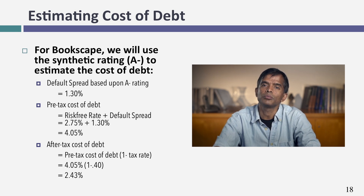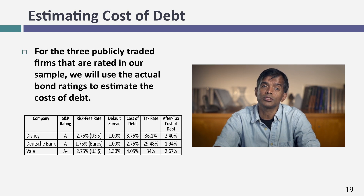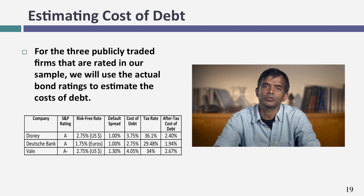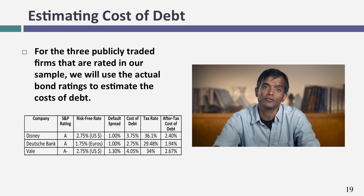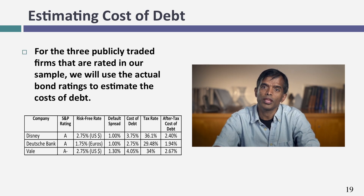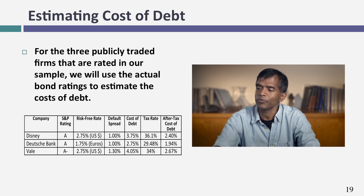For the remaining companies: Disney's actual rating is single-A, giving a pre-tax cost of debt of 3.75%. Disney's marginal tax rate is 36.1% — they helpfully broke it out in their most recent financial statements. Netting out the tax benefit gives an after-tax cost of debt for Disney of 2.4%. For Deutsche Bank, the German marginal tax rate is 29.5%; applying that to the pre-tax cost of debt yields an after-tax euro cost of debt of 1.94%. For Vale, the actual A- rating already incorporates country risk, giving a cost of debt of 4.05%. Applying Brazil's 34% marginal tax rate gives an after-tax cost of debt for Vale of 2.67%.